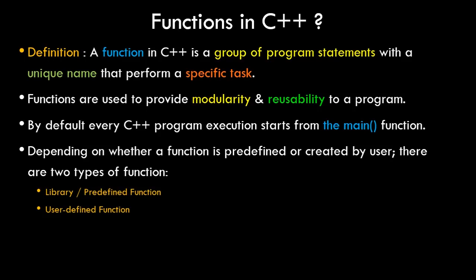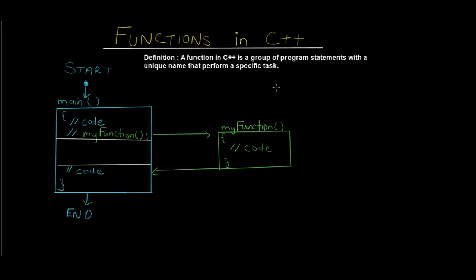So what exactly happens in the practical scenario when the program contains a function and how does it execute? We have a program with a main function — this is where execution starts. The execution runs line by line. At the second line we have a function call — 'my_function' with round braces is the function name. Then we have the function definition with the function body containing some code, and then normal execution continues.